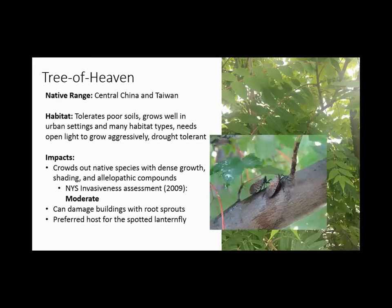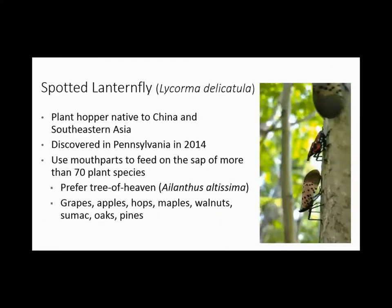The root sprouts can actually damage buildings, similar to Japanese knotweed. But the main reason tree of heaven has been included in the mapping challenge this summer is that it is the preferred host for spotted lanternfly. Though spotted lanternfly is not yet known to be established in New York State, there is a very large and growing population in Pennsylvania in multiple locations.